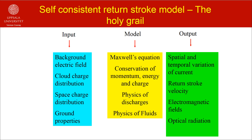Before going into engineering models, let me tell you about the features of the best return stroke model that we can ever create — that is the holy grail of return stroke models. In such a model, we will have as input parameters the background electric field, charge distribution in the cloud, space charge distribution in air, and ground properties. We combine these with Maxwell's equations, the conservation laws of nature, physics of discharges, and physics of fluids. The outputs would be the spatial and temporal variation of the return stroke current, return stroke velocity, electromagnetic fields, physical parameters of the return stroke channel, and optical radiation.